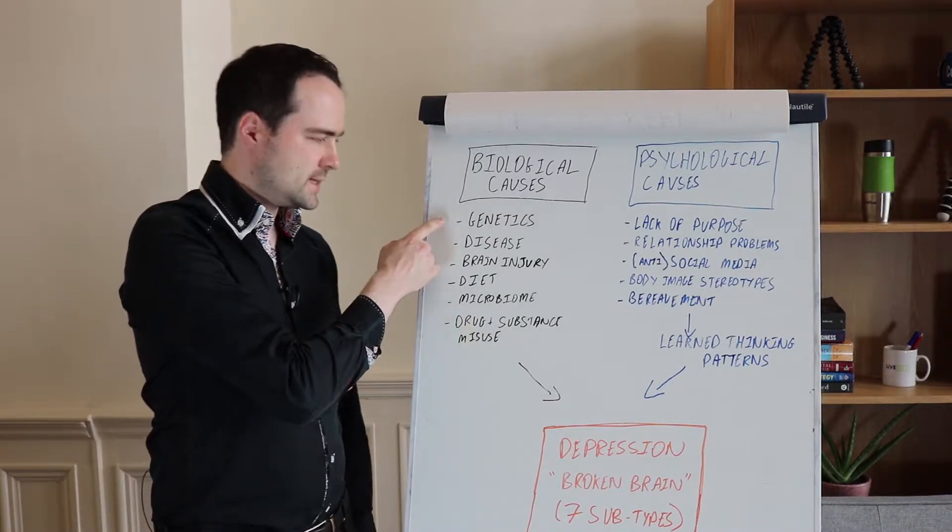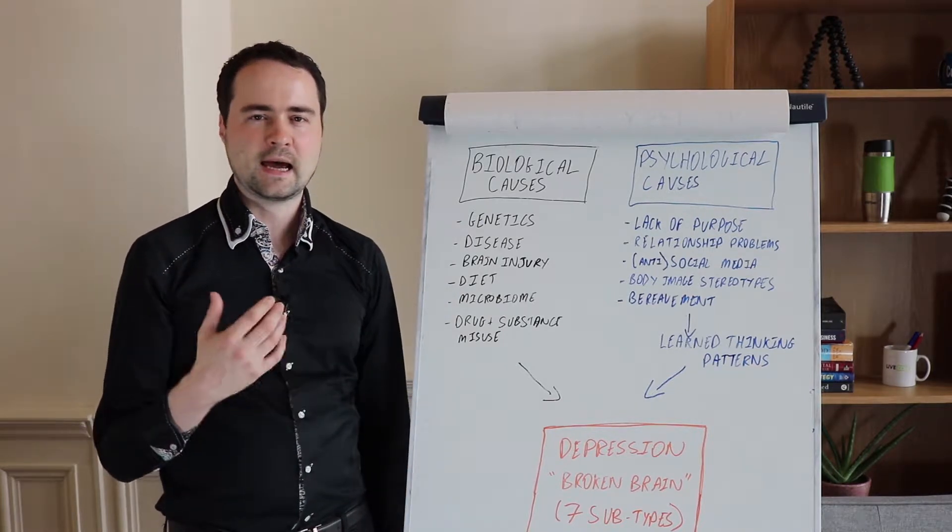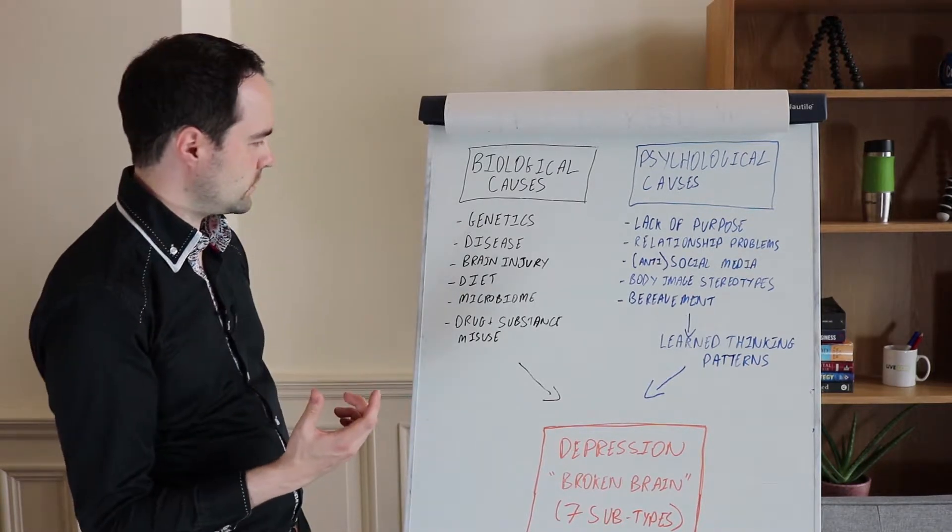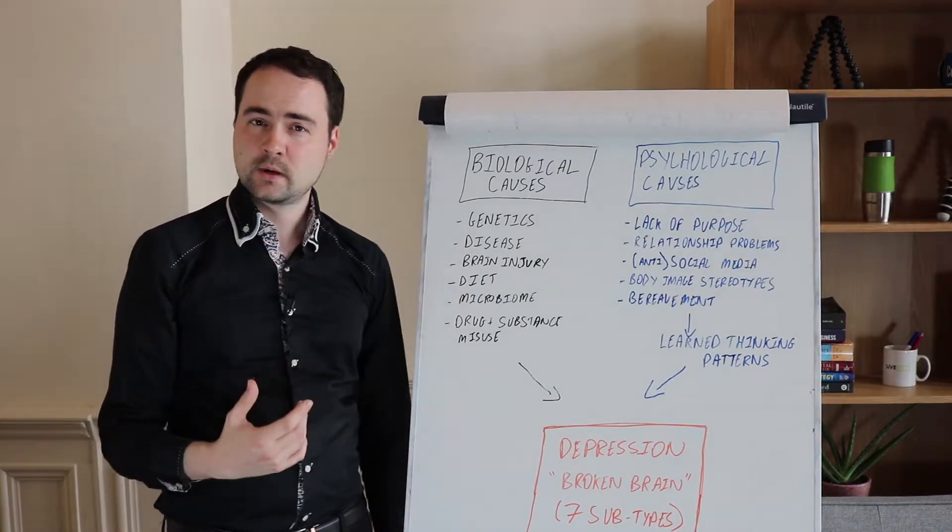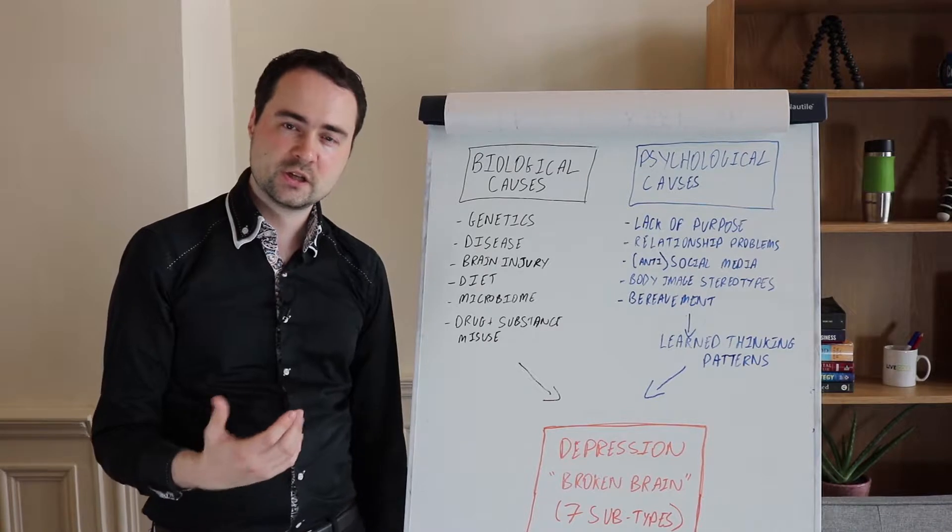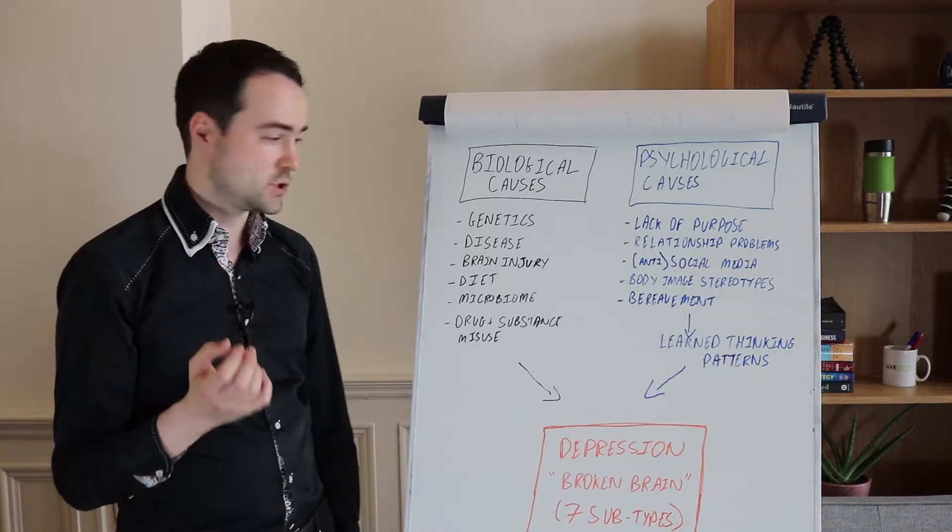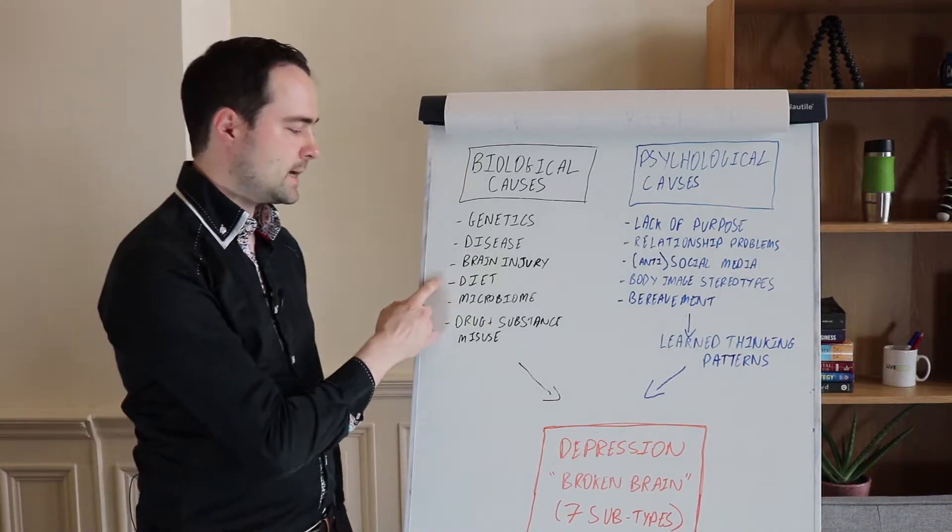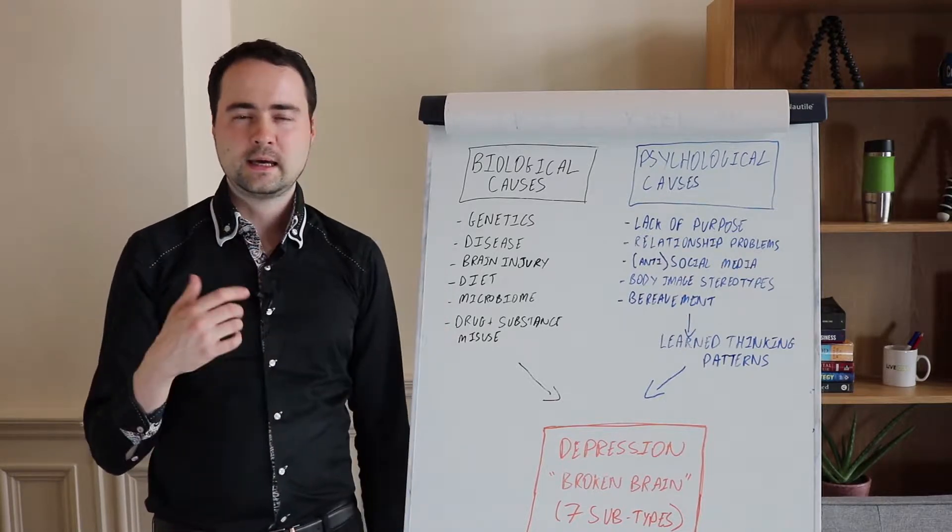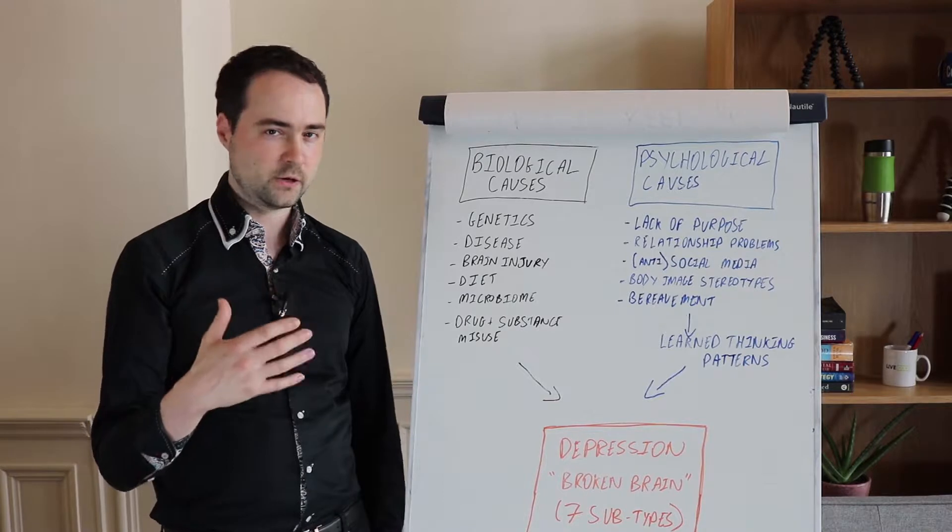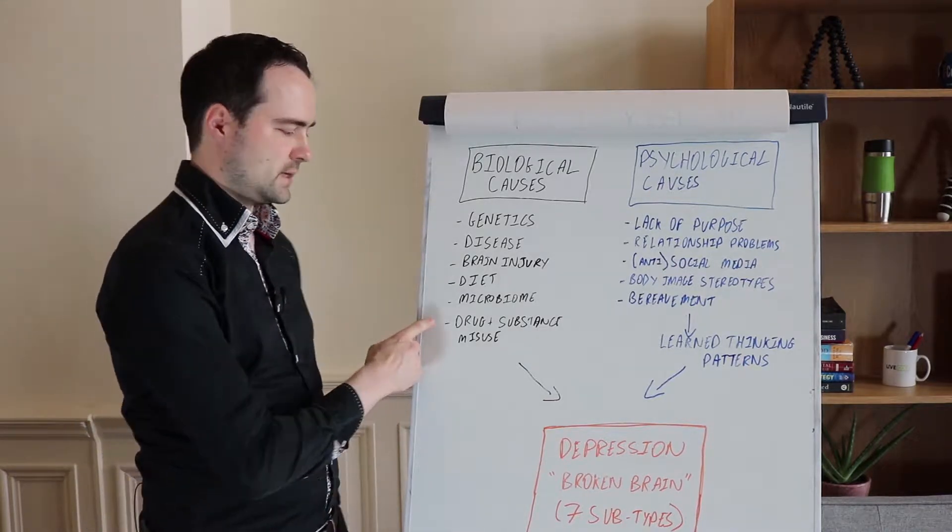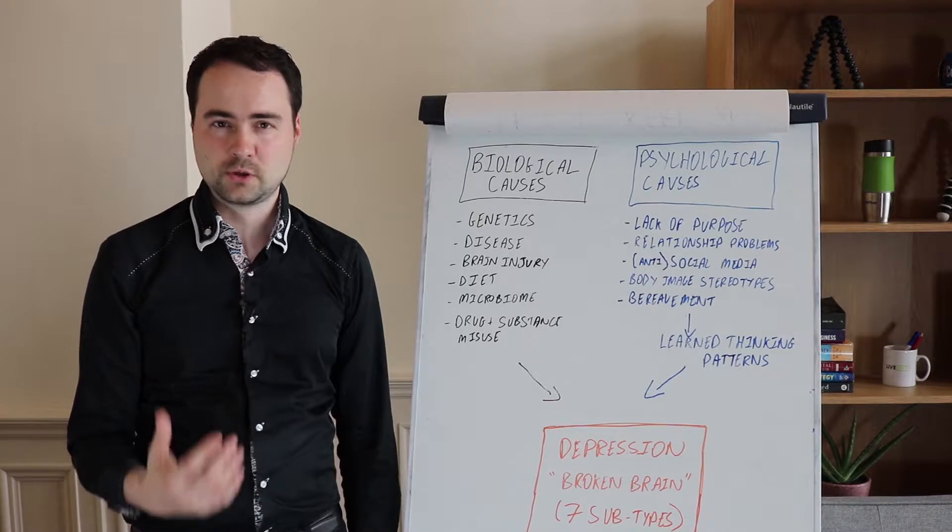For example, genetics. Certain types of depression we know can have a very strong genetic component. Certain types of disease. Brain injury is another one. Some people have personality changes after they have some sort of brain injury because it damages part of the brain. Diet and microbiome are two areas that we're becoming increasingly aware of at the moment, and I've got several videos talking about all of those.